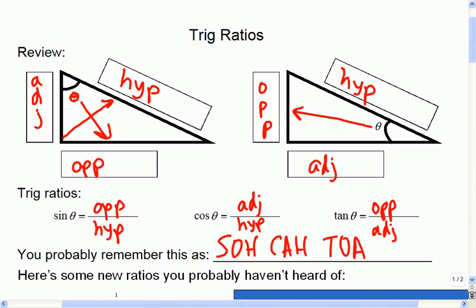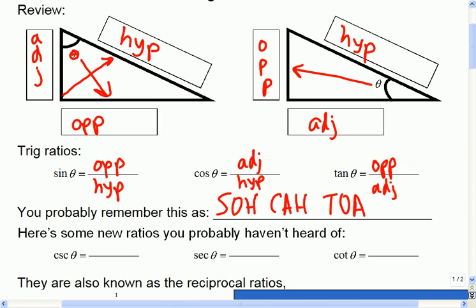Okay so that's probably grade 9 slash 10. Then we didn't really do much trig in grade 11, but here's the new ratios you probably haven't heard of. So, the csc, the sec, and the cot, yeah, well let me tell you what they mean.